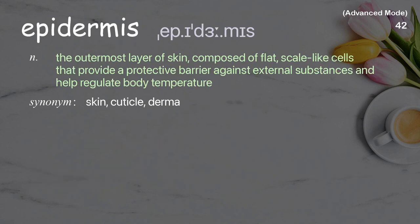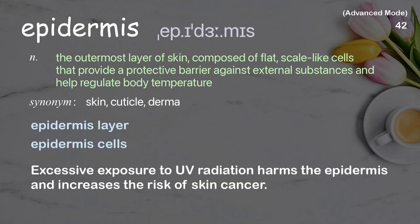Epidermis: The outermost layer of skin, composed of flat, scale-like cells that provide a protective barrier against external substances and help regulate body temperature. Examples: epidermis layer, epidermis cells. Excessive exposure to UV radiation harms the epidermis and increases the risk of skin cancer.